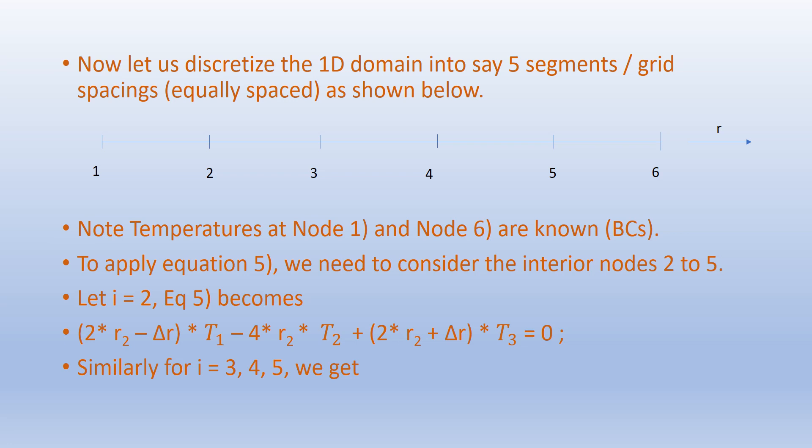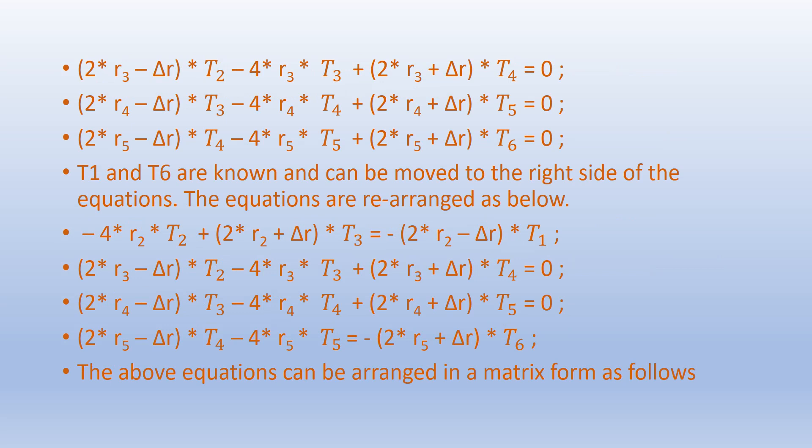To apply equation 5 we consider the interior nodes from node 2 to node 5. For i = 2, equation 5 becomes: (2R₂ - ΔR)T₁ - 4R₂·T₂ + (2R₂ + ΔR)T₃ = 0. Similarly for i = 3, 4, and 5 we get corresponding equations. Temperatures at node 1 and node 6 are known, so T₁ and T₆ are moved to the right-hand side. The equations are then rearranged.